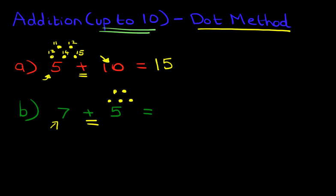And now we're going to start counting upwards. Our starting point is the number on the left. That is 7. 7, 8, 9, 10, 11, 12. So the answer is 12.